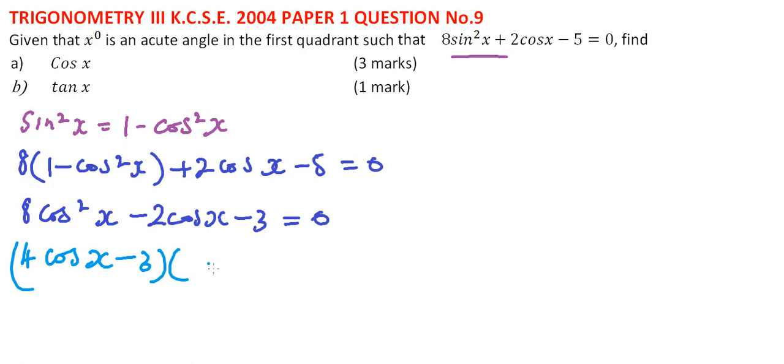Now we have cos x = 3/4 or -1/2. In our unit circle, when tangent is negative, it means it is not an acute angle, so we are left with cos x = 0.75.